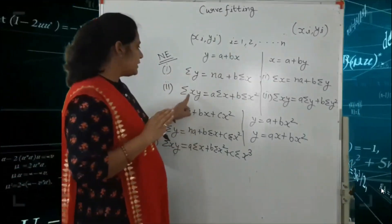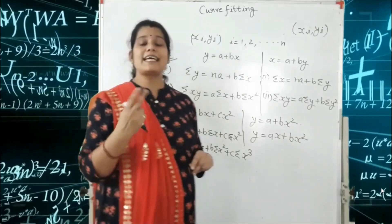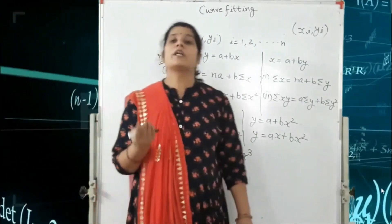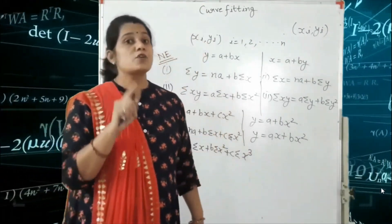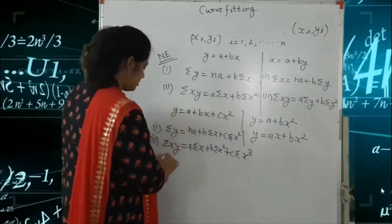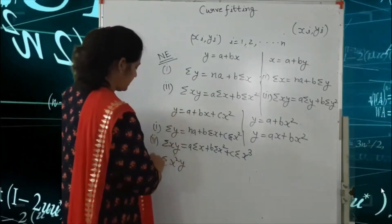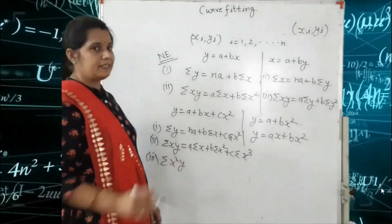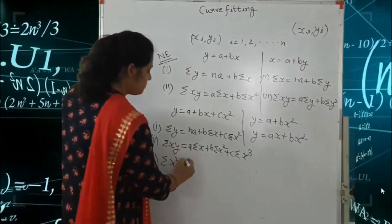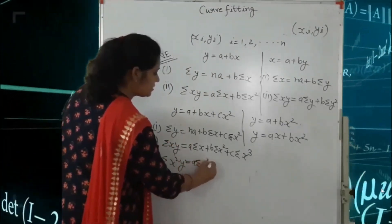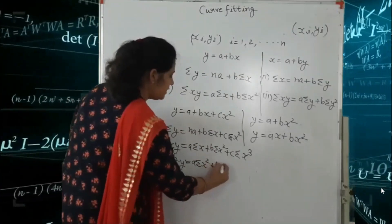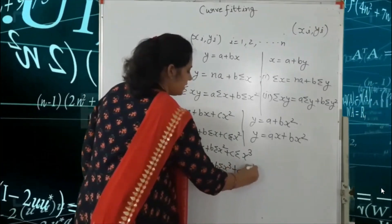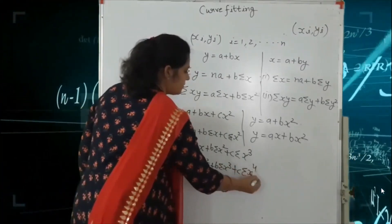Always keep in mind: for a straight line equation, the second equation is in the format of summation XY. For a quadratic equation, the last equation is summation X square Y. So the third normal equation is: summation X square Y is equal to A summation X square plus B summation X cube plus C summation X to the power 4.